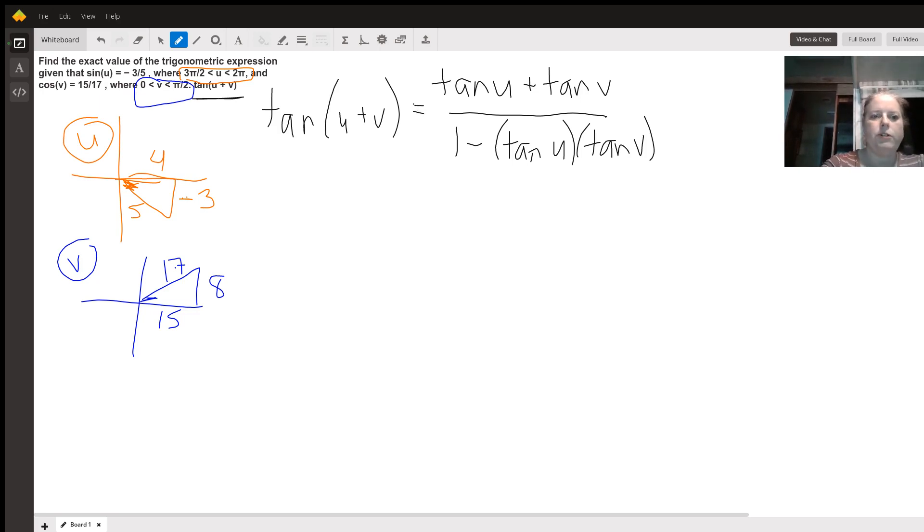So now we're going to use our triangles to fill in that information. The tangent of u tells us to use triangle u, and the tangent is opposite over adjacent. So that would be negative 3 over 4.